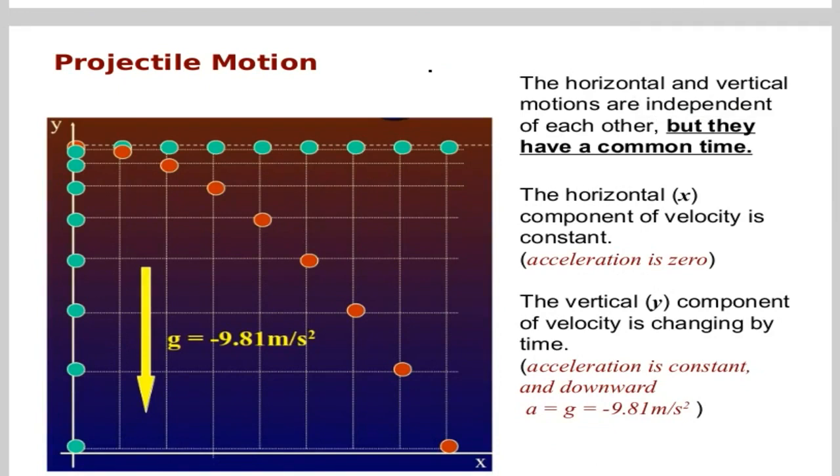Horizontal and vertical motions are independent of each other, but they have a common component which is time. So when we drop a ball or when we launch horizontally, these two balls hit the ground at the same time.